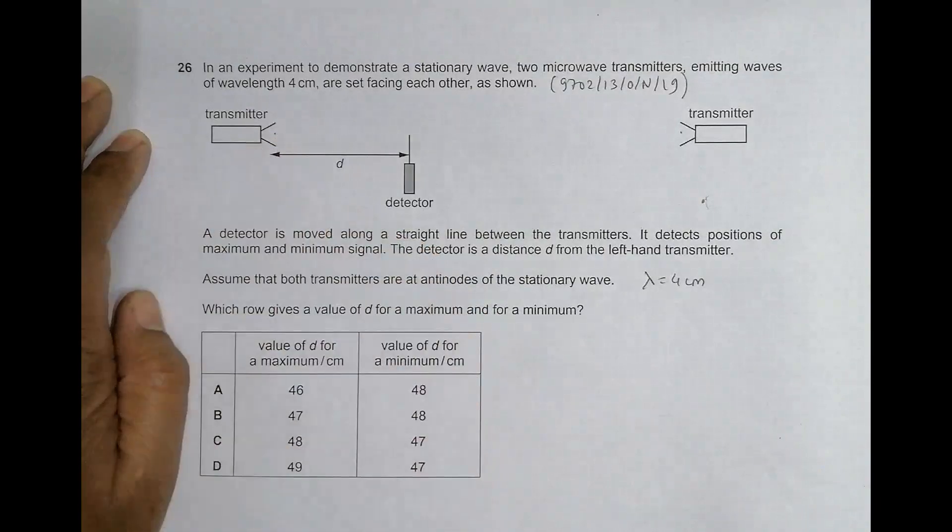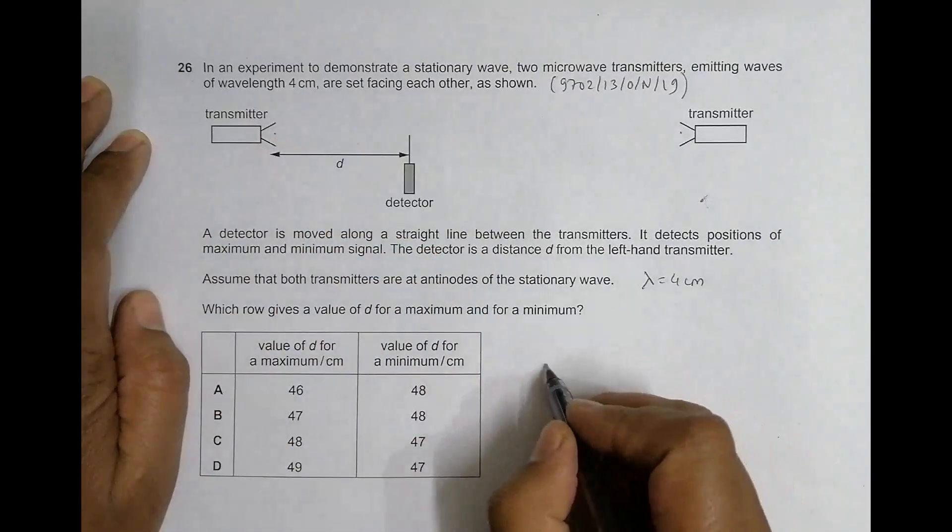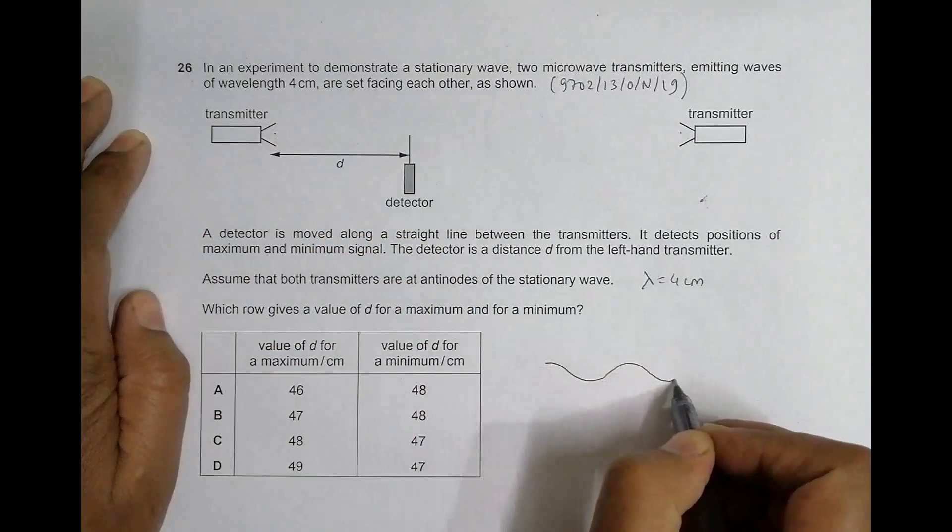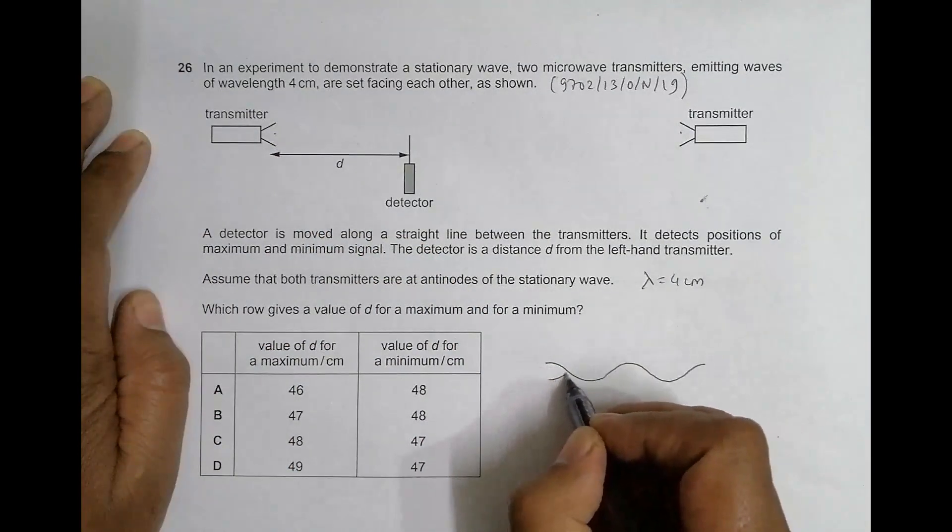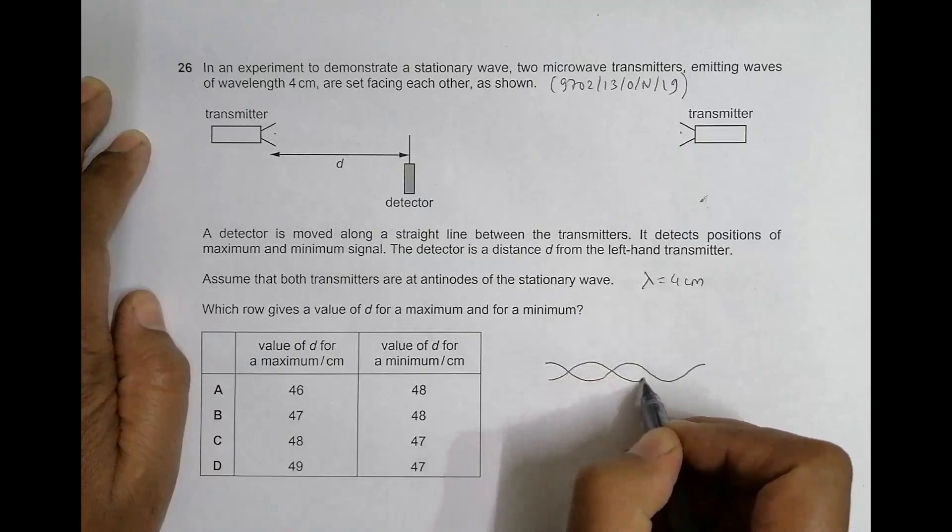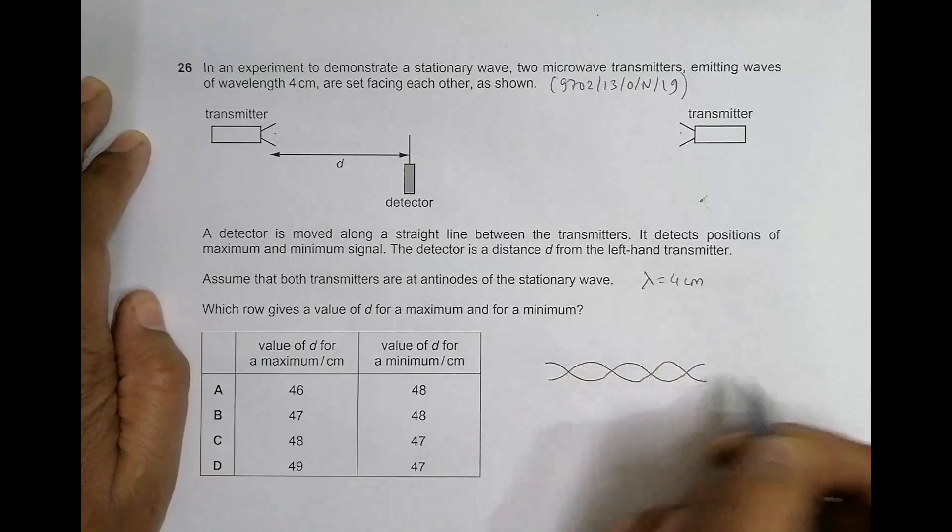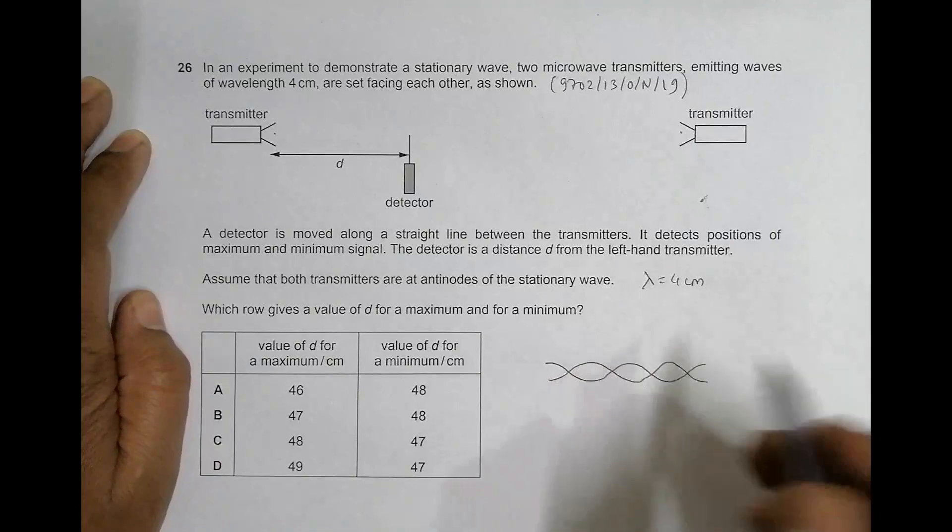So initially we have antinodes. The wave starts like this - from here it goes like this, like this, and from here it goes like this and so on.